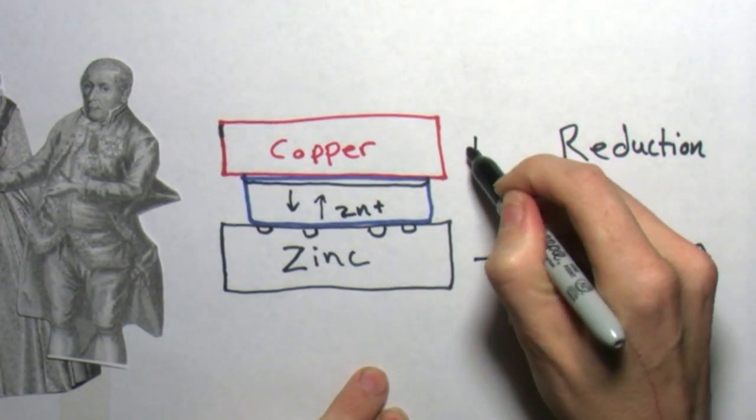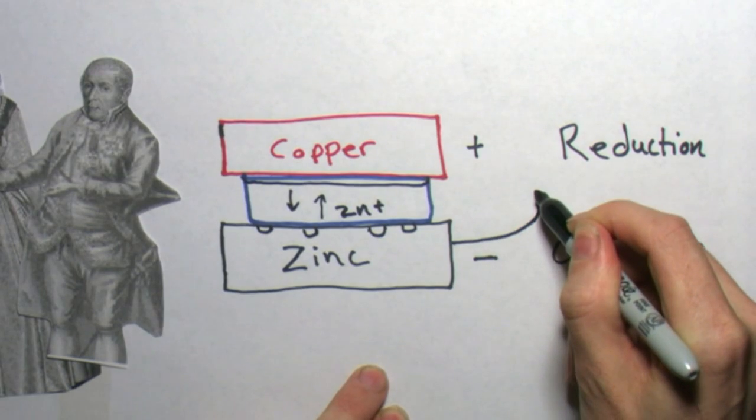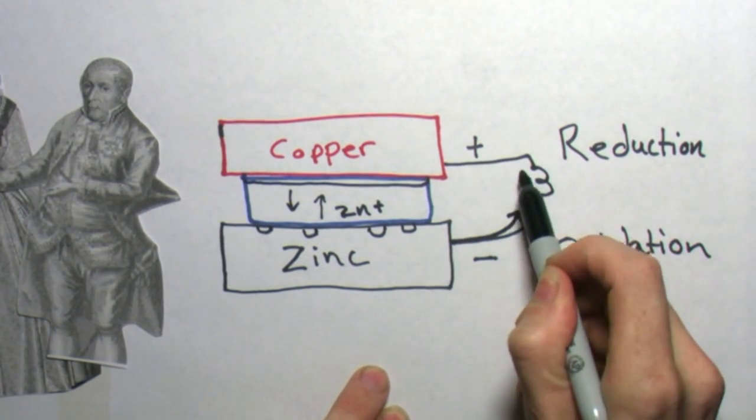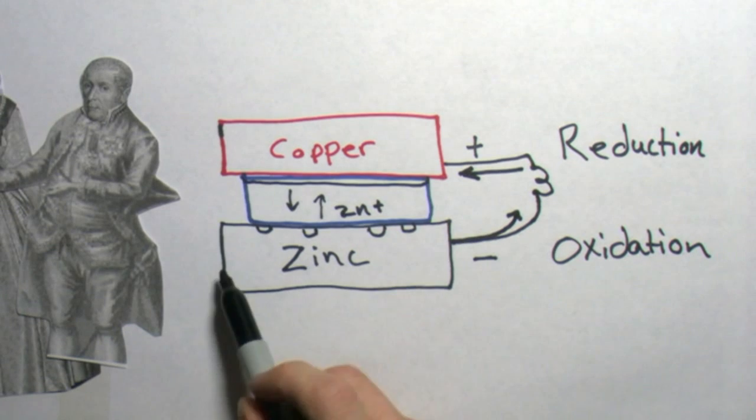Depending on the chemistry of the cell at the reduction electrode sometimes gas is formed and other times it's plated and negative ions diffuse away. Externally in the circuit the electrons flow from the oxidation electrode to the reduction electrode.